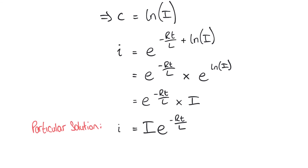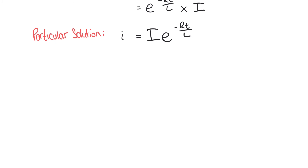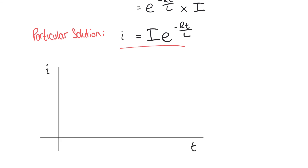We've purposely avoided too much electrical theory, but it's worth noting that this particular solution is in the form of a decay curve. By substituting values for resistance, inductance, and initial current, we find this circuit has a characteristic where the initial current decays to zero over time. I hope you found this video useful — this has been the second example of applying first-order differential equations to engineering contexts.